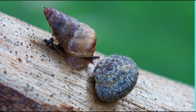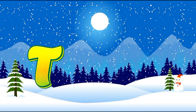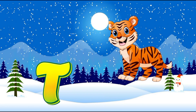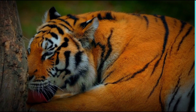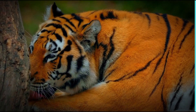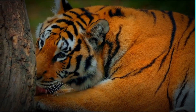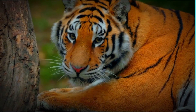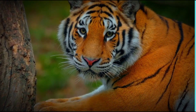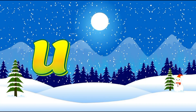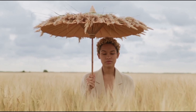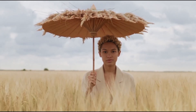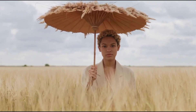A, B, C, D, E, F, G. T for Tiger. T is for Tiger. W, X, Y, and Z. Now I know my ABCs. Next time won't you sing with me. U for Umbrella. U is for Umbrella. Umbrella.